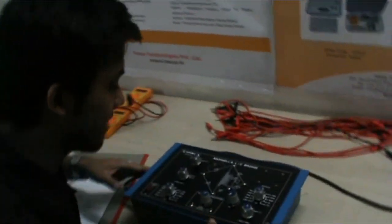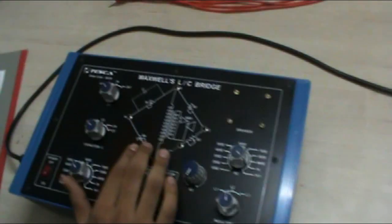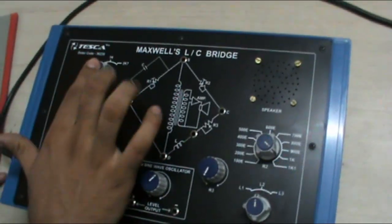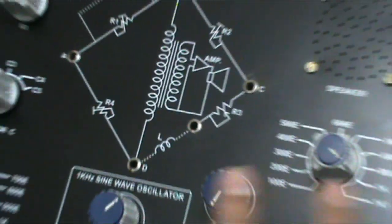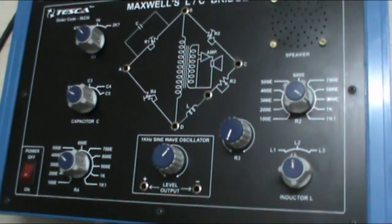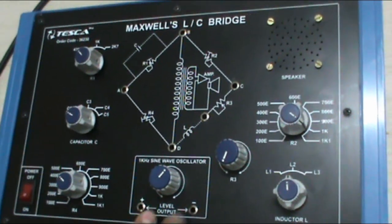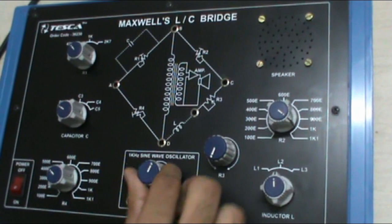Now here is our equipment. This is Maxwell's LC bridge. These are the resistance knobs R1, R4, R2, R3. This is the inductance knob, the capacitor knob, and the 1kHz sine wave oscillator knob.